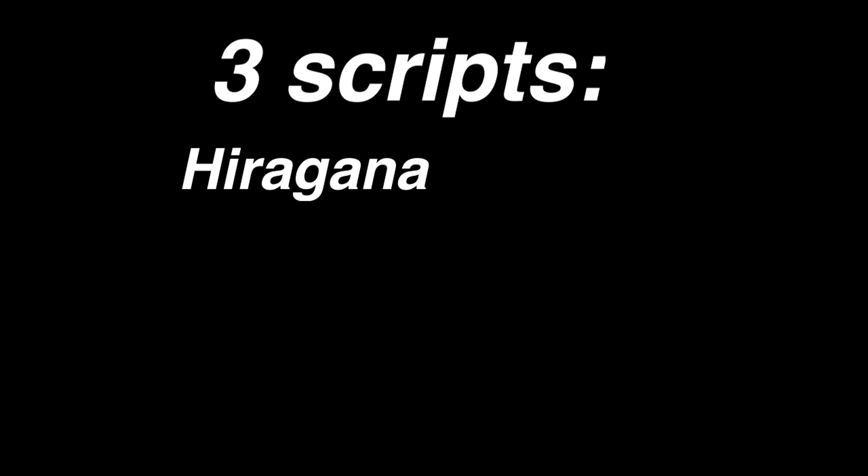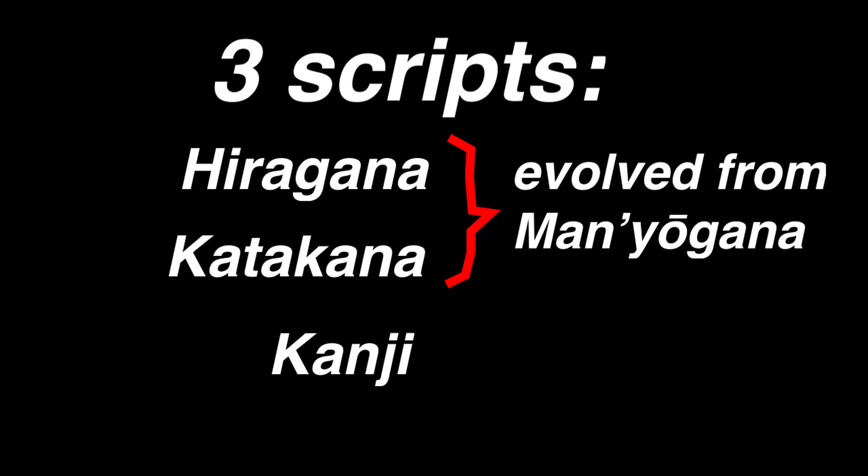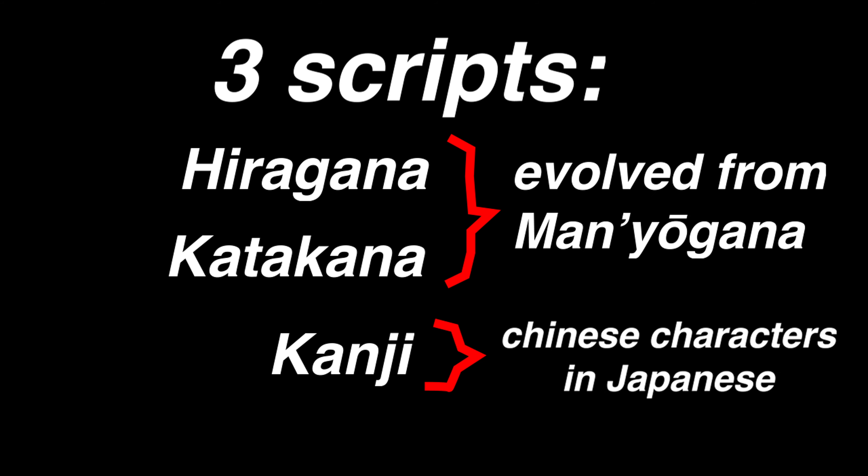But enough about history — let's have a look at Japanese script. Japanese has three scripts: hiragana, katakana, and kanji. Hiragana and katakana both evolved from the Manyogana writing system, and kanji is the interpretation of Chinese characters in Japanese.